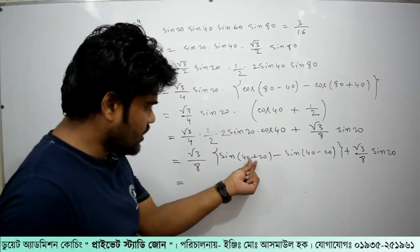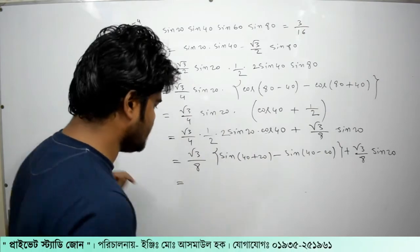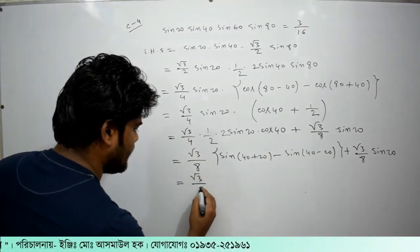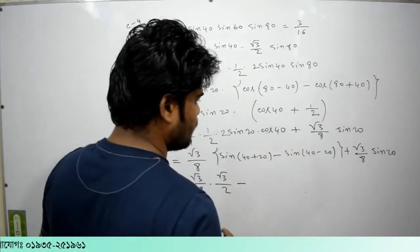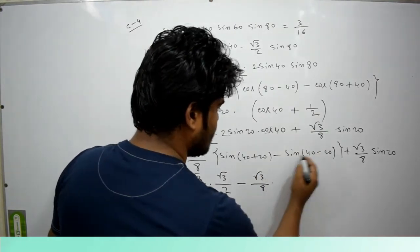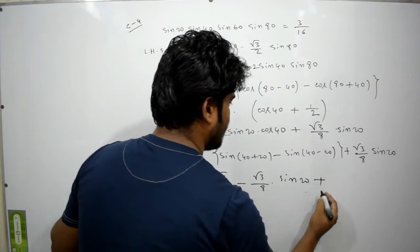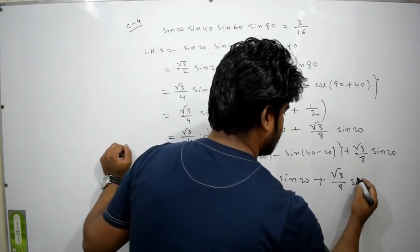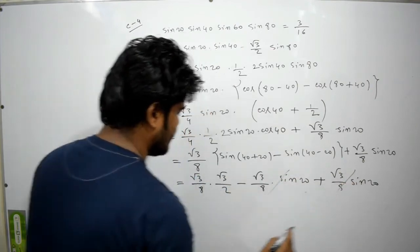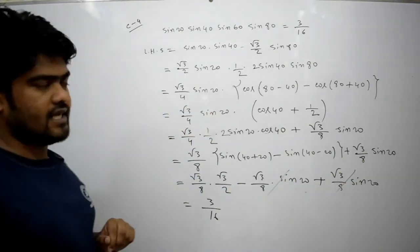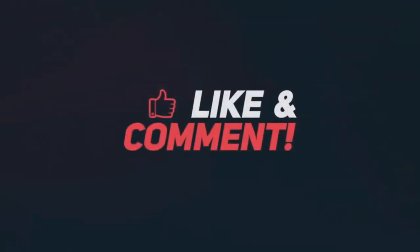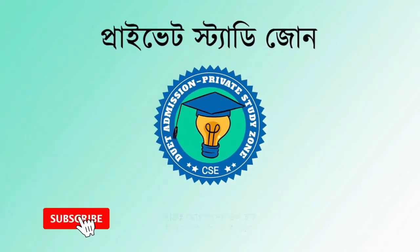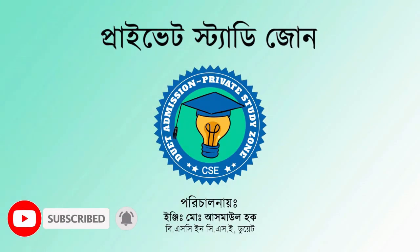Looking at sin 40 plus 20, that gives us sin 60 degrees. The value of sin 60 degrees, combined with sin 20, along with root 3 by 8 and sin 20, leads us to the final simplified result of root 3 by 8.